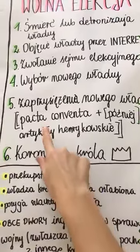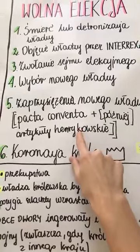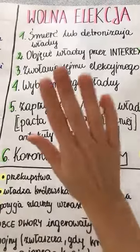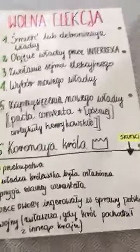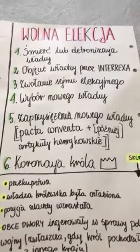Po zaprzysiężeniu pacta conventa, po Henryku Walezym mamy artykuły henrykowskie. Pacta conventa to są zobowiązania osobiste króla – każdy król obiecuje szlachcie coś swojego. Natomiast artykuły henrykowskie będą zbiorem wszystkich praw szlacheckich, potwierdzającym wszystkie przywileje, które szlachta posiada. Przyjedzie nowy król i nie może powiedzieć, że szlachta ma za dużo praw – musi to podpisać. I jeszcze wpłaca do skarbca. Gdy już taki zgodził się być królem Polski, odbywa się koronacja na Zamku Królewskim w Krakowie.